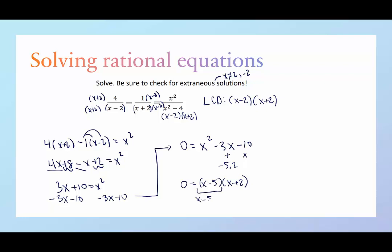Here we have x minus 5 is equal to 0, in which case we have a solution of x equals 5. Here we have x plus 2 is equal to 0, in which case we have a solution of x equals negative 2.